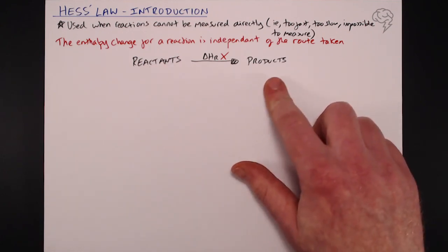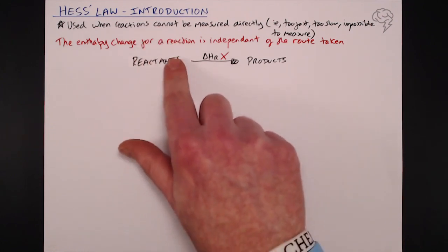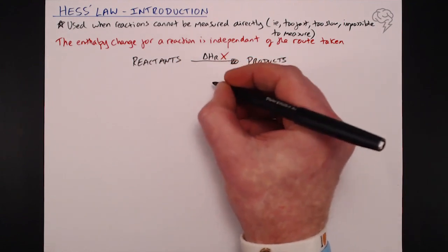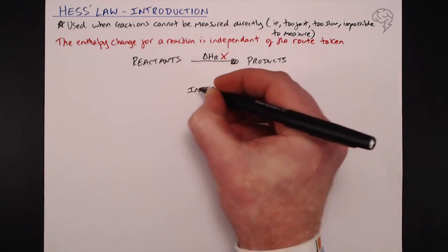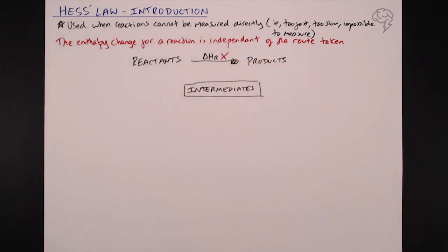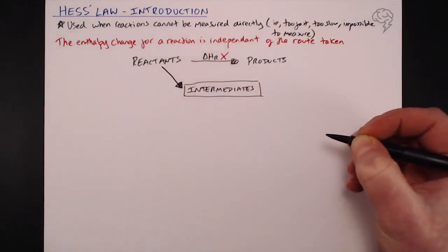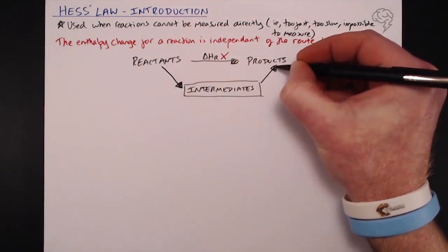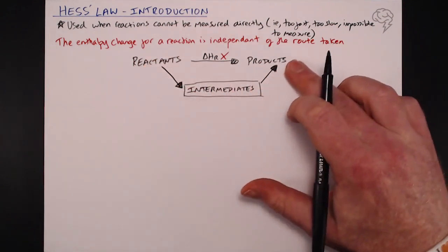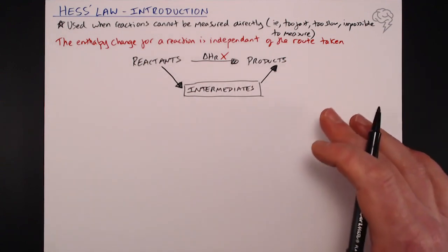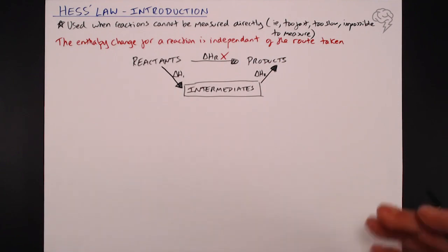We need to find an alternative route, because Hess's law states that the enthalpy change for a reaction is independent of the route taken. Let's say there's another way of getting from reactants to products via some intermediates. So we're going from reactants to these intermediates, and then from intermediates to products. If we can measure the delta H for each of those two steps — let's call them delta H1 and delta H2 — then we can find our unknown delta H-r.